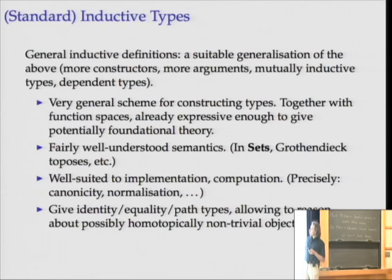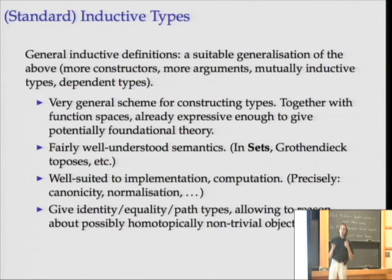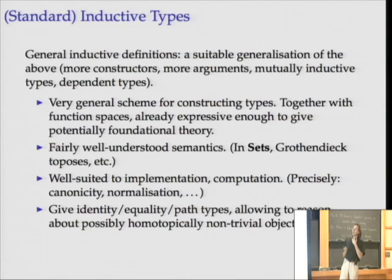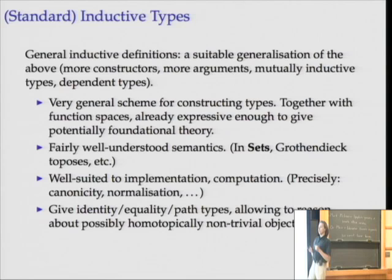The particularly interesting and perhaps surprising thing from our point of view is that these give us identity types — equality types, as they were originally called — which were intended for representing equality in the logic. But as has recently been found, giving the main impetus for what we're doing in the special year, those equality types can actually be seen as path types. They can be a lot more non-trivial than one thinks of equality as being, letting one think of types not as sets but as things that behave like spaces.